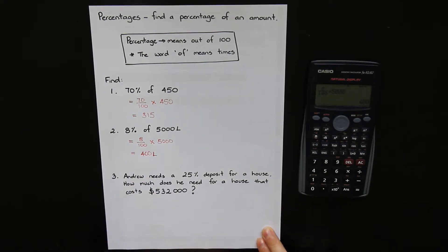Question three is the same style of question, but just a wordier question. So Andrew needs a 25% deposit for a house. How much does he need for a house that costs 532,000?